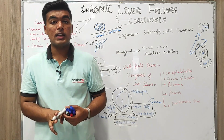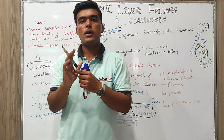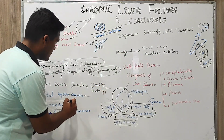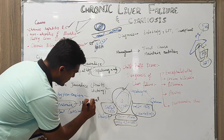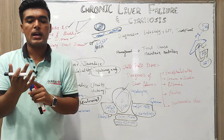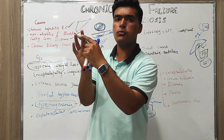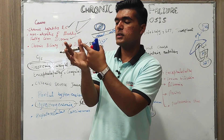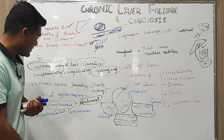Hypo-estrogenemia leads to gynecomastia — development of breast tissue in males. We also have spider angiomas when discussing the endocrinal changes in the patient. Spider angiomas are seen on the skin and appear like a spider formation — a bluish-colored arterial spider formation occurring on the peripheries.